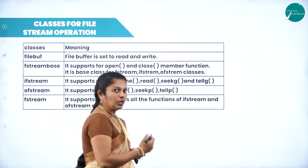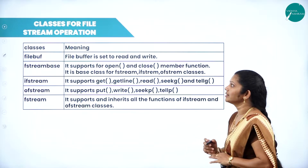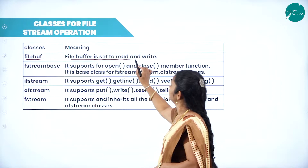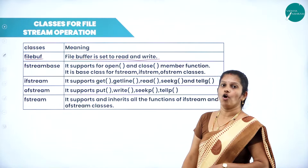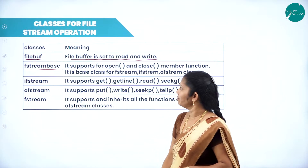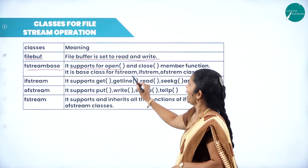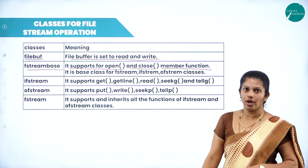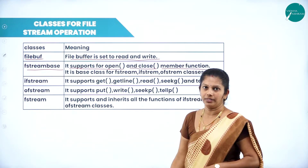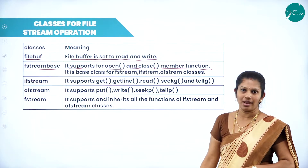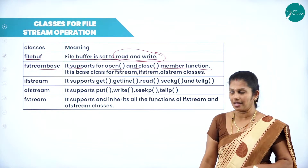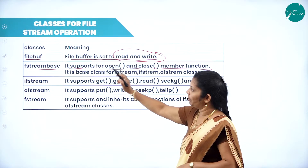The classes for file stream operations are: filebuf, fstreambase, ifstream, ofstream, and fstream. filebuf is used for read and write operations. fstreambase supports the open and close member functions — before any read or write operation the file must first be opened, and after all operations are done the file must be closed.